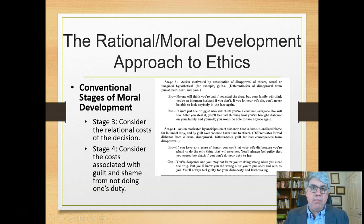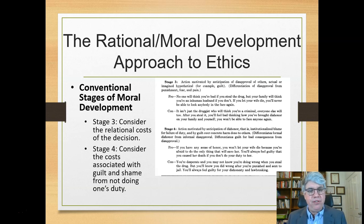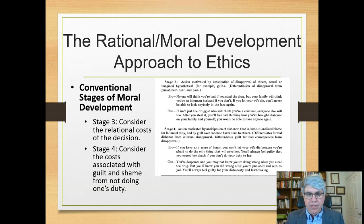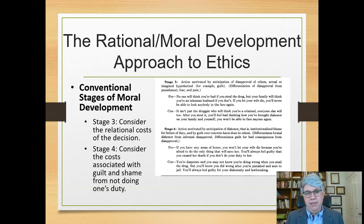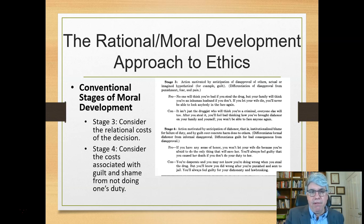Stages three and four are more advanced and sophisticated, and they're where most adults stop. Stage three is where you consider the relational costs of the decision. An argument for stealing the drug would be: no one will think you're bad if you steal the drug, but your family will think you're an inhuman husband if you don't. But you could also reason that everyone will think you're a criminal after you steal it — you'll feel bad thinking how you brought dishonor on your family and yourself.